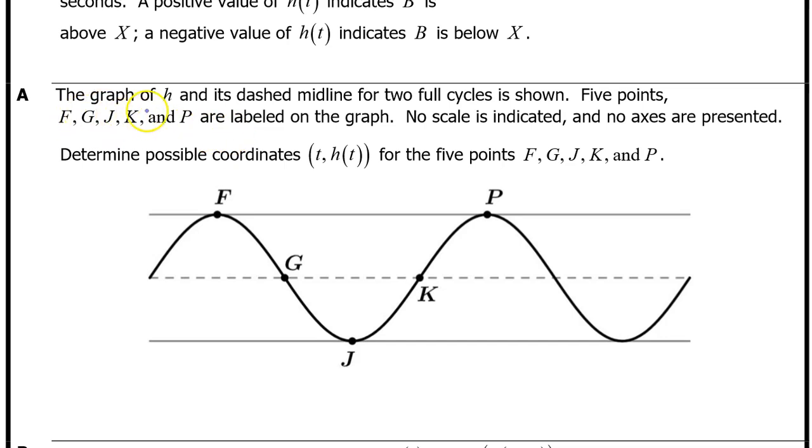Part A. The graph of h and its dashed midline for two full cycles is shown. Five points F, G, J, K, and P are labeled on the graph. No scale is indicated and no axes are presented.